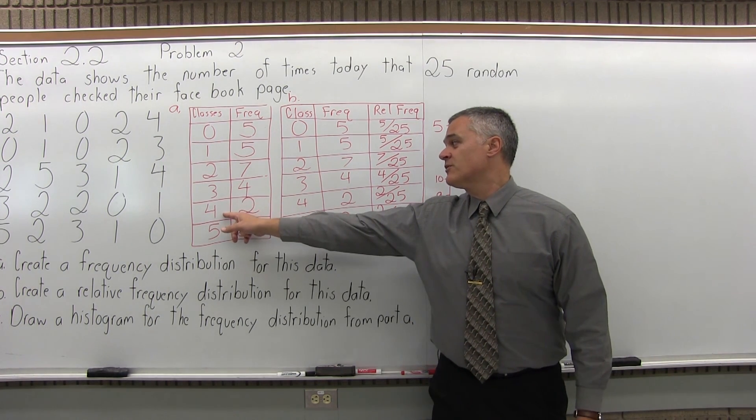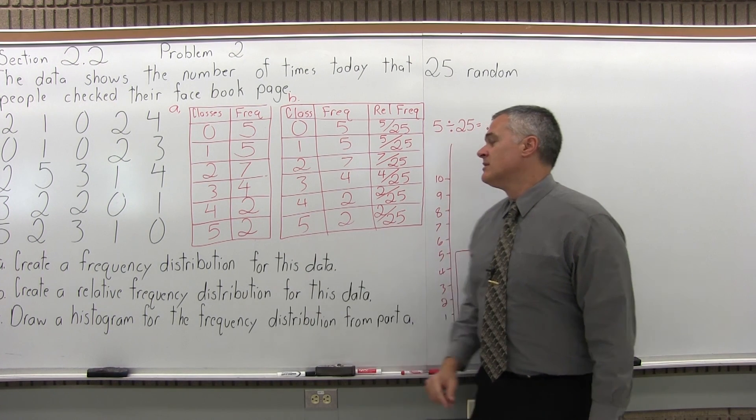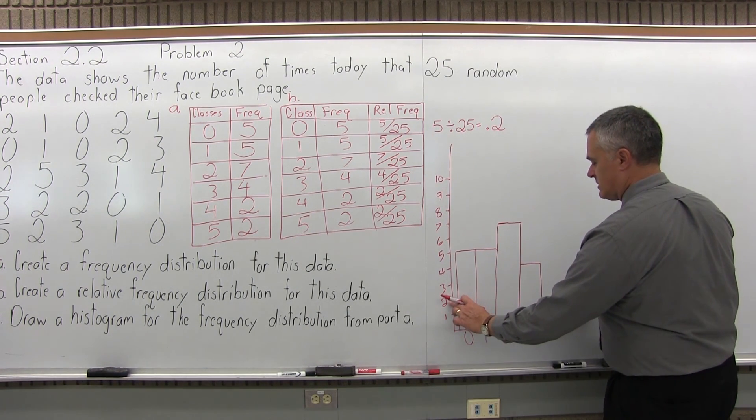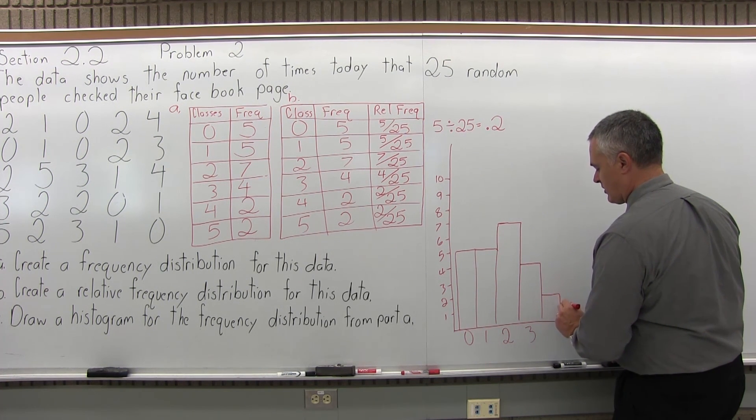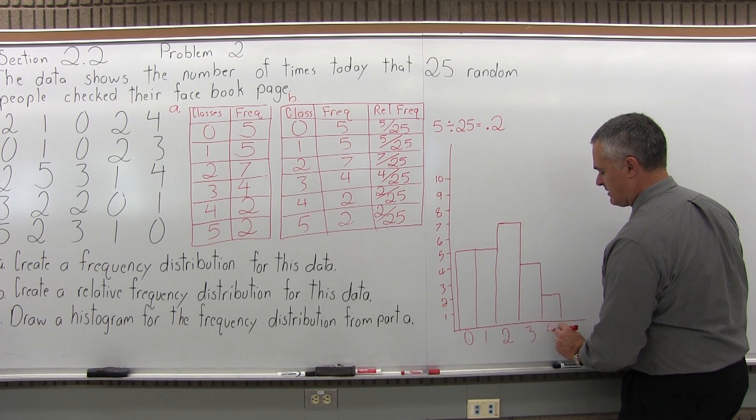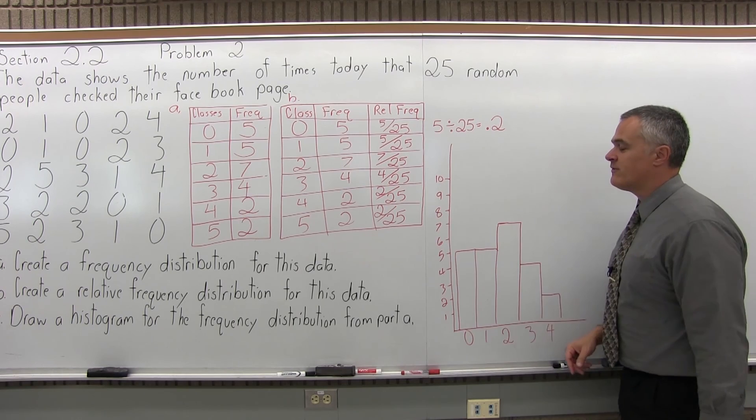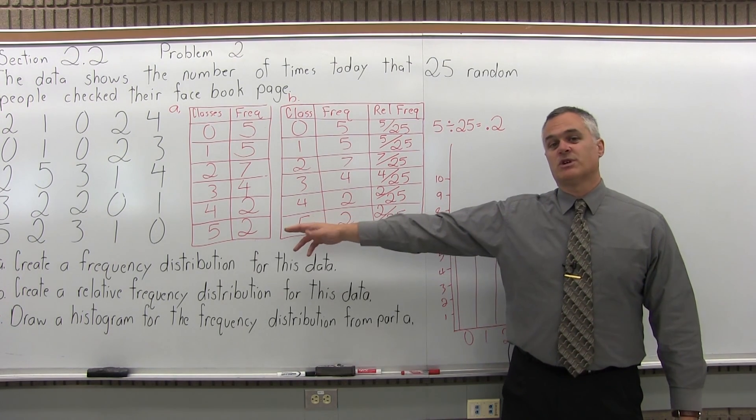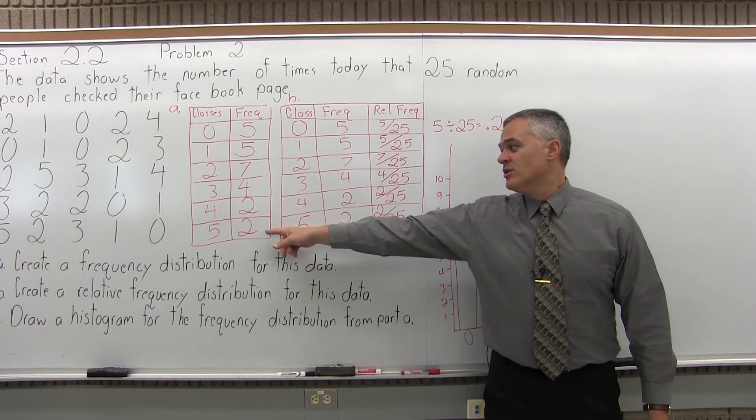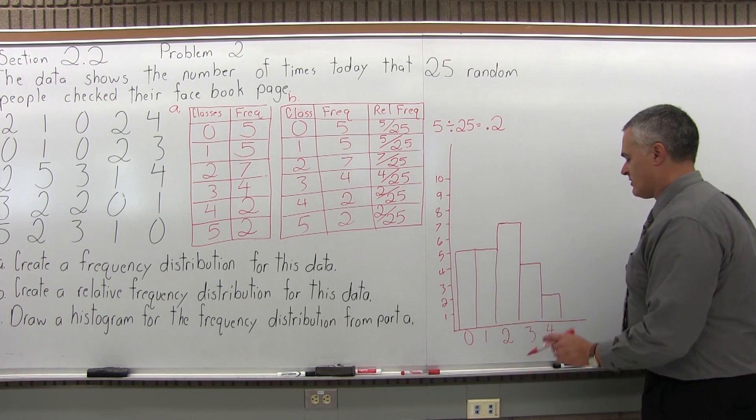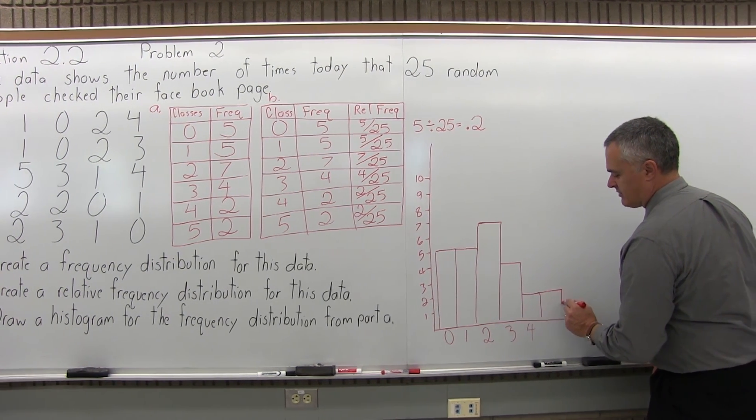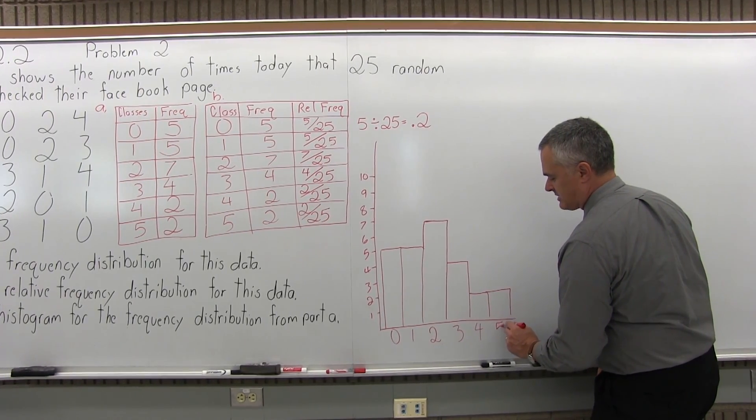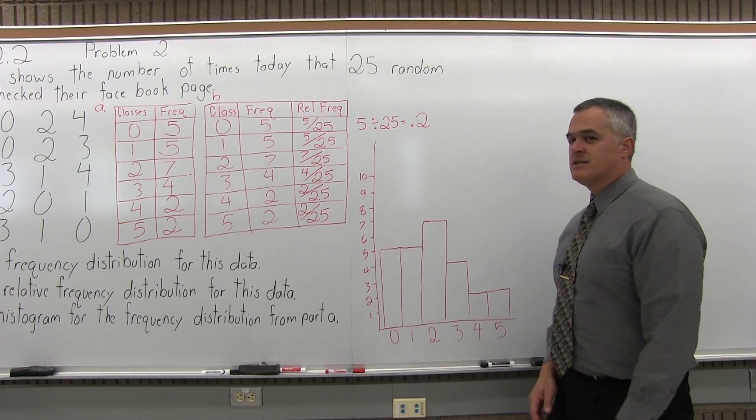People who checked Facebook four times in a day, frequency was two. So the height of the next bar will go up to two. Again, it has to be vertical, it has to touch the previous bar. So that gets labeled four. And finally, the last one, people who checked Facebook five times in one day, only two people did that. So frequency of two means the bar has a height of two, same height as the previous bar it touches. And it gets labeled with a five. And that's the histogram.